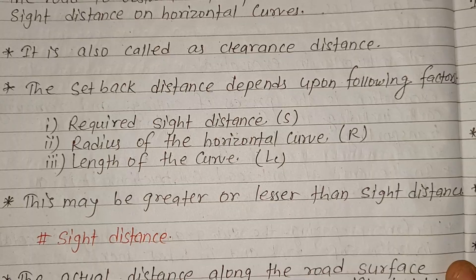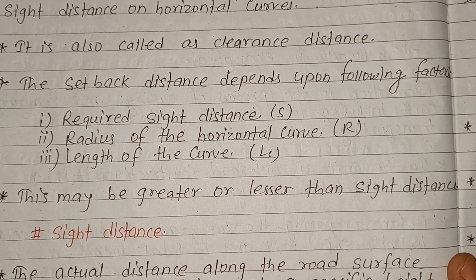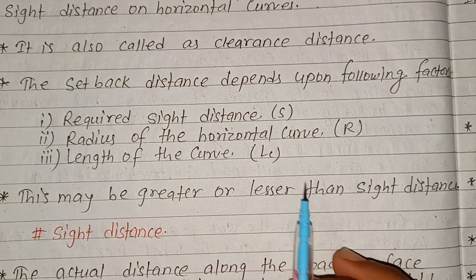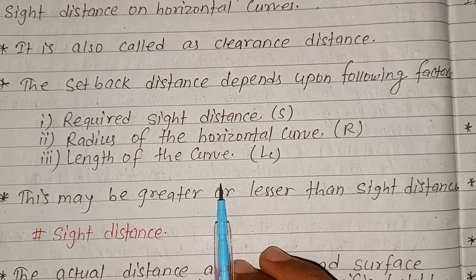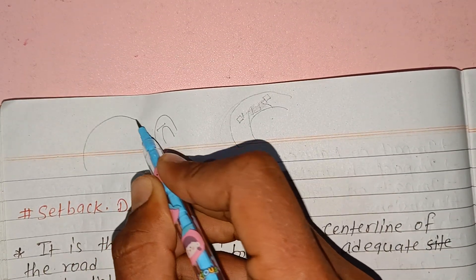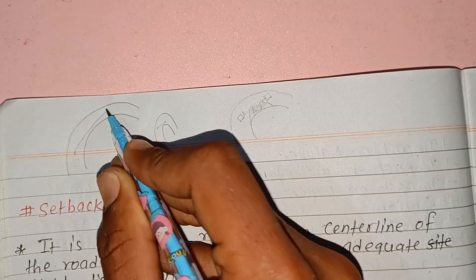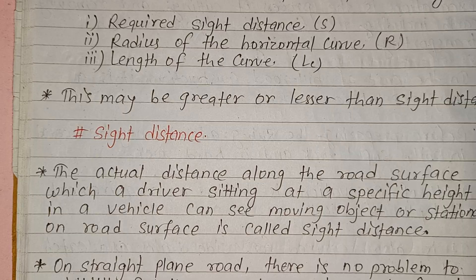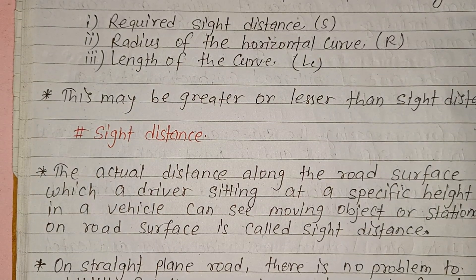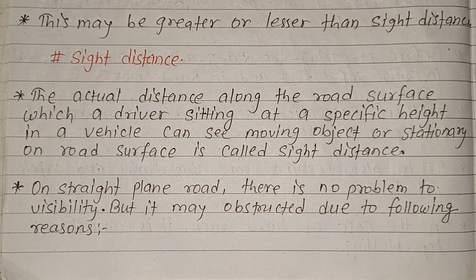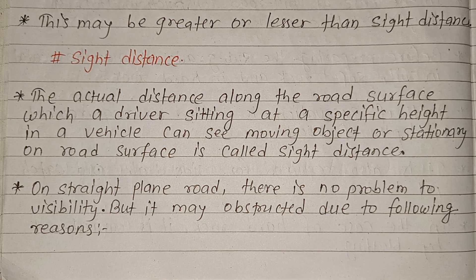The setback distance depends upon the following: the required sight distance and the radius of the curve. Sight distance is the actual distance along the road surface which a driver, sitting at a specific height in a vehicle, can see a moving object on the road surface.